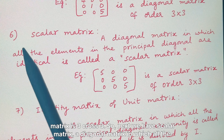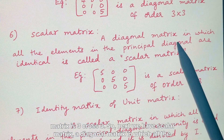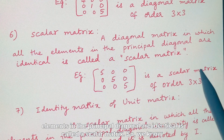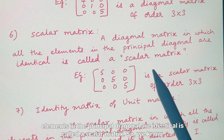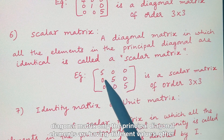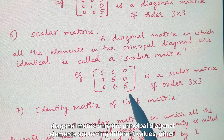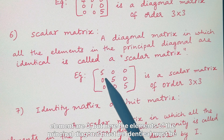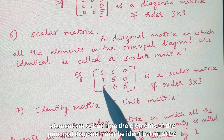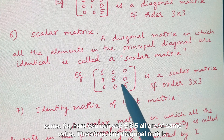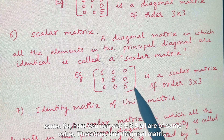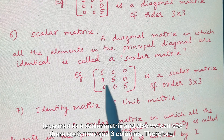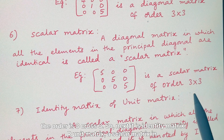The sixth type is a scalar matrix — a diagonal matrix in which all the elements in the principal diagonal are identical is called a scalar matrix. Here, the principal diagonal elements are 5 5 5, all of the same value, so this diagonal matrix is termed a scalar matrix of order 3 cross 3.